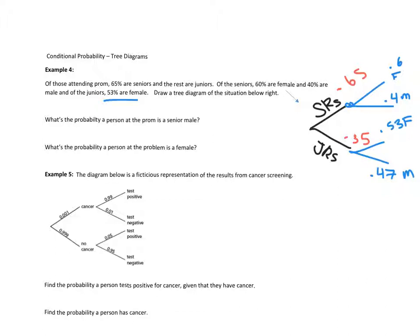The reason to use the tree diagram is to answer questions like: what's the probability a person at prom is a senior male? Multiply the probability they're a senior by the probability they're male, following that branch: 0.65 times 0.4, which equals exactly 26%.